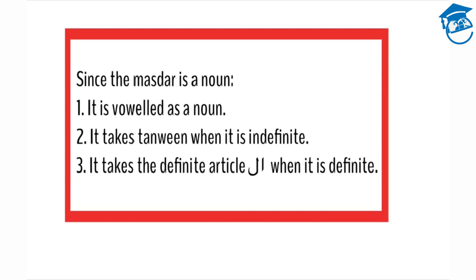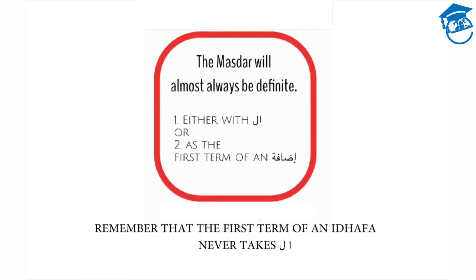Number two, it takes tanween when it is indefinite. And three, it takes the definite article alif-lam when it is definite. The masdar will almost always be definite — either with an alif-lam, or as the first term of an idafa. Remember that the first term of an idafa never takes alif-lam.